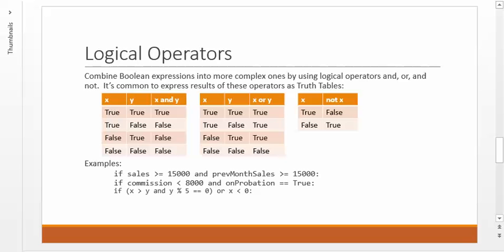So more in your book about that. But here are some examples of how this might work. So first, if sales is greater than or equal to $15,000, and previous month's sales is greater than or equal to $15,000 as well. The second one is if commission is less than $8,000 and on probation equals true. Obviously, that is a Boolean variable. We're going to talk about those in a minute. Then here's a more complicated one. If, parentheses, X is greater than Y and Y remainder 5 is equal to 0, all in parens, or X is less than 0. So sometimes you need parentheses to make sure the ands and ors are done in the order that you want.